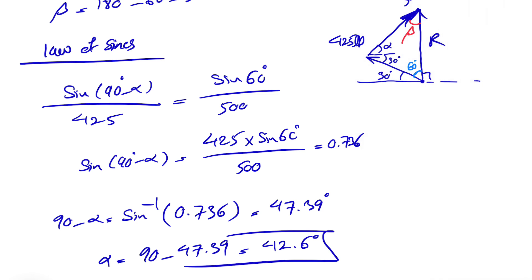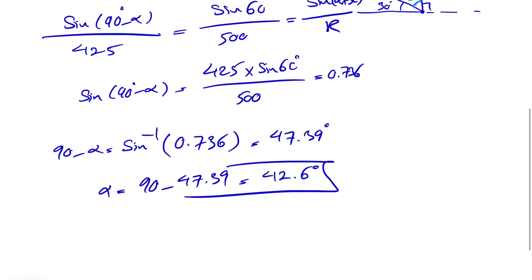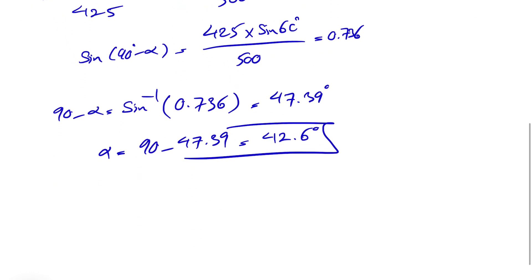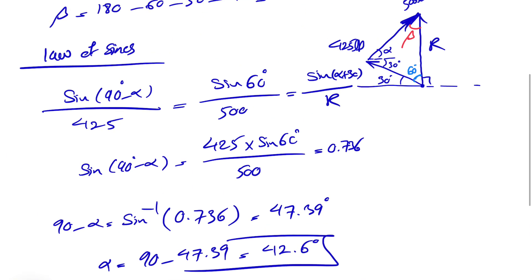And if we continue our law of sines and put the sine of alpha plus 30 over R, we should be able to find R. So basically our R would be 500 times sine of alpha plus 30 degrees.